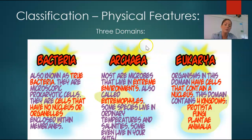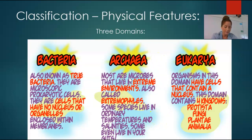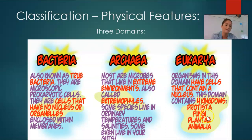Archaebacteria live in extreme environments — we likely have never really encountered these. These are extremophiles, typically microbes or prokaryotes, but they live in extreme environments. An example would be bacteria found in the Dead Sea, which has a really salty environment where no other living thing can exist. Another example could be bacteria living in a hot spring. The last domain is eukarya — everything that's not a eubacteria or archaebacteria is in the eukarya. So these are protists, fungi, plants, and animals — all of those would be in the domain of eukarya.